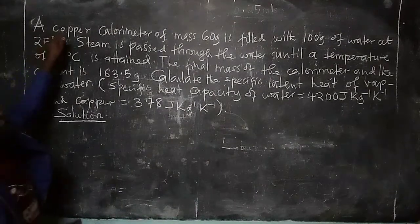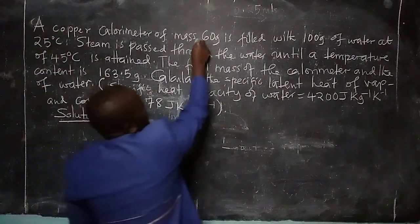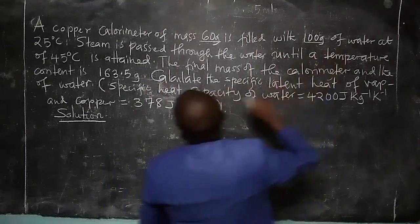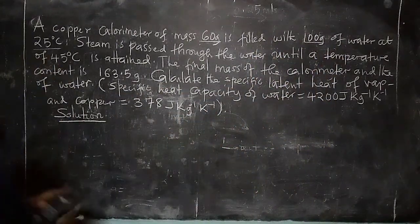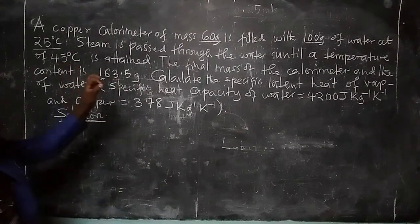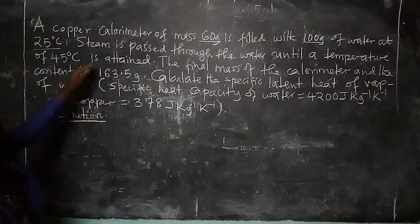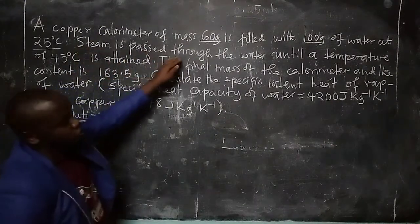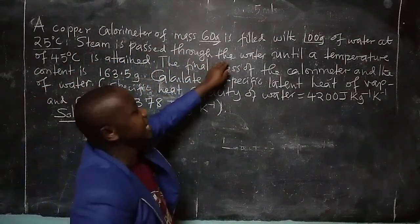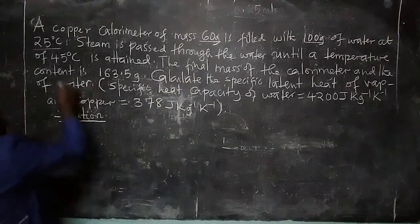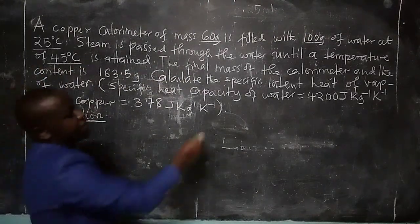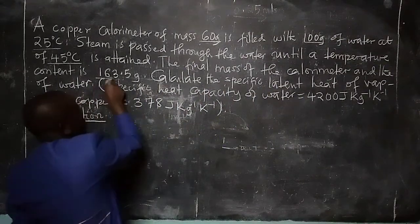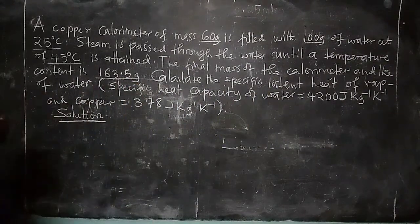According to this question, we are told that a copper calorimeter of mass 60 grams is filled with 100 grams of water at 25 degrees Celsius. Steam, which is water in gaseous form, is passed through the water until a temperature of 45 degrees Celsius is attained. The final mass of the calorimeter and the condensate is found to be 163.5 grams.